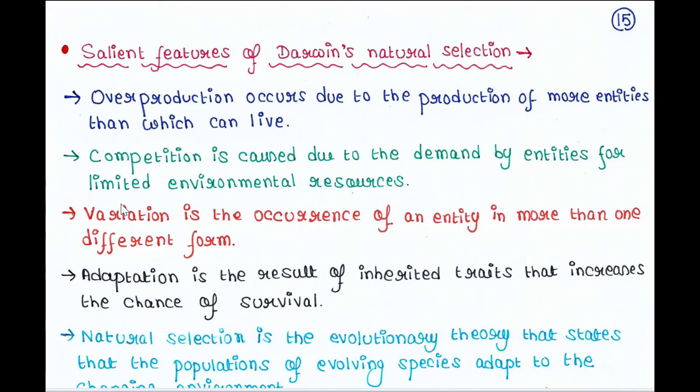Third, variation is the occurrence of an entity in more than one different form. If all birds choose the same food source, it may create a problem. But if they have variation and prefer different food sources, it will solve the problem.